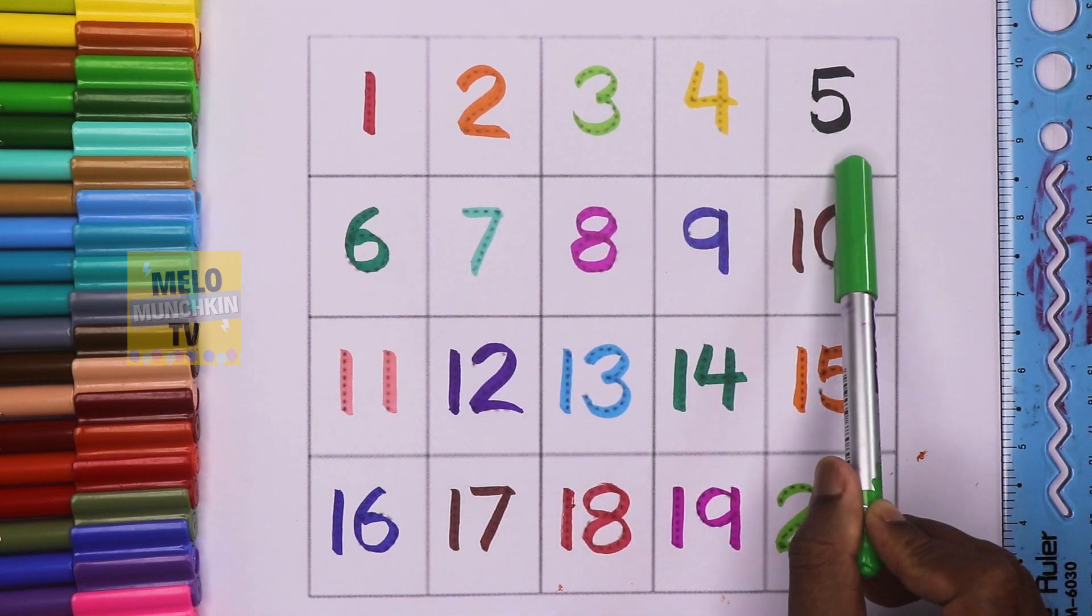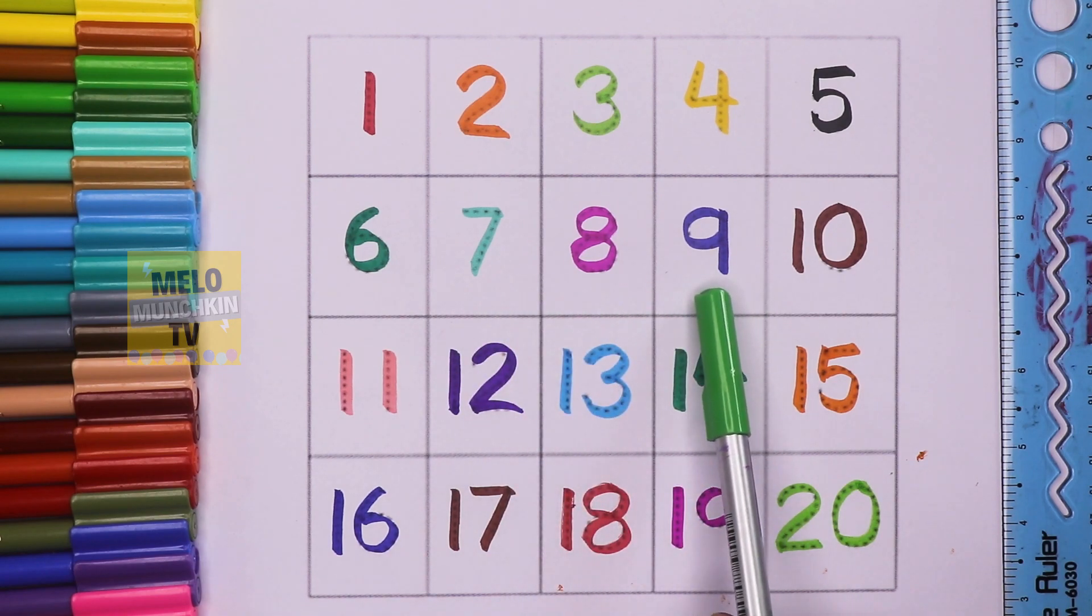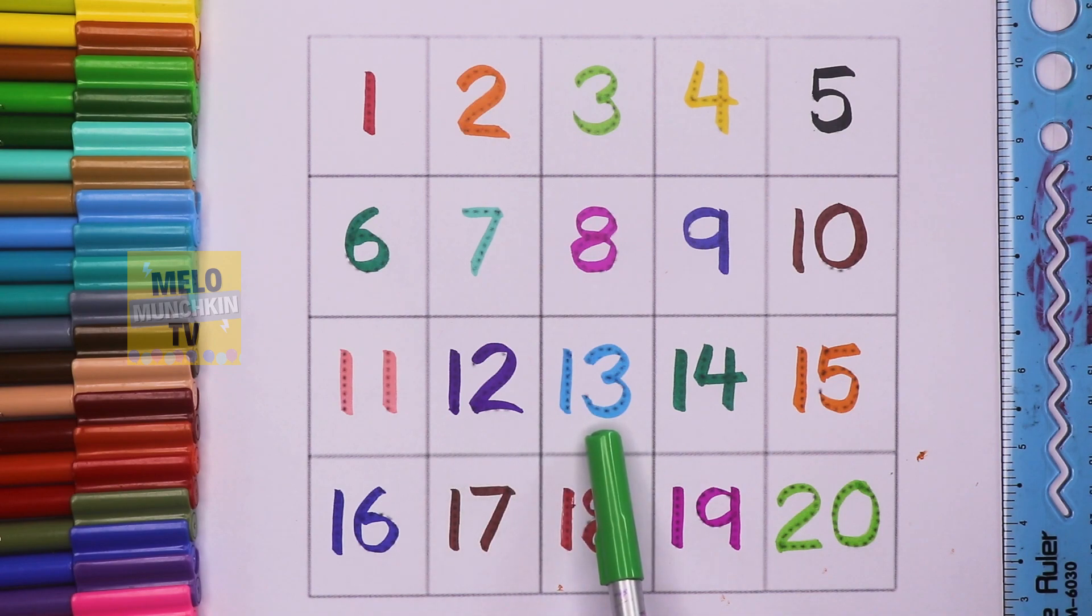So let's count once again: one, two, three, four, five, six, seven, eight, nine, ten, eleven, twelve, thirteen, fourteen, fifteen, sixteen, seventeen, eighteen, nineteen, and twenty.